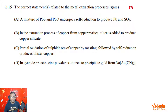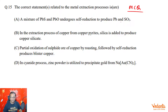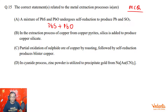This is a multiple correct type question, so be careful. The question says: a mixture of PbS and PbO undergoes self-reduction to produce Pb and SO₂. This is the correct statement — we study in extraction of lead that first we partially roast lead sulfide, which gets converted into lead oxide, and then they undergo self-reduction to give lead and SO₂. So this is the correct statement.